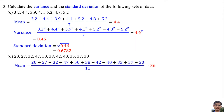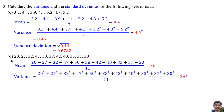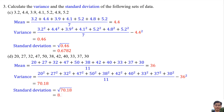Part D: The mean is the average of all the numbers, so the mean is 36. The variance is calculated by squaring all the numbers, adding them, dividing by the total number of data, then subtracting the mean squared. So the variance is 70.18. The standard deviation is the square root of the variance — square root of 70.18 — which equals 8.377.